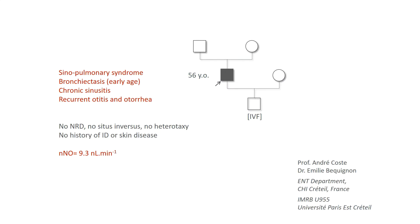This 56-year-old male patient was referred by our ENT colleagues Professor André Coste and Dr. Émini Béquignon. He had a sinopulmonary syndrome with bronchiectasis since a very early age. His main complaint was chronic sinusitis, and examination of the nasal cavities showed an edematous mucosa with very sticky mucus. He had recurrent otitis and otorrhea and partial hearing loss. He had no history of neonatal respiratory distress, no situs inversus, neither heterotaxy. He had no history of immune deficiency or skin disease.